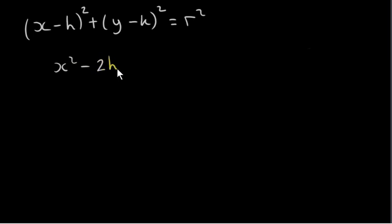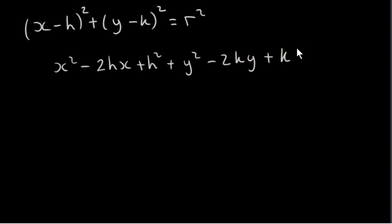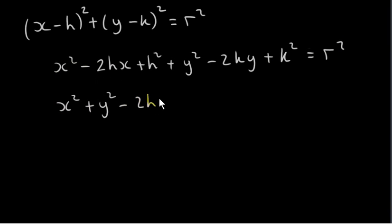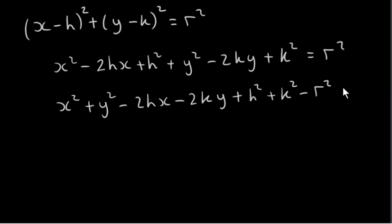We get x squared minus 2hx plus h squared. When we square out the other term, we get y squared minus 2ky plus k squared. And on the right-hand side we have r squared. The next thing we will do is bring the square terms together, then write down the x term, then the y term. Finally, we write down the numbers: h squared, k squared, and bring r squared over — so minus r squared — and we have 0 on the right-hand side.